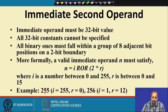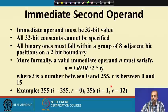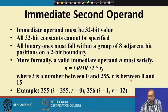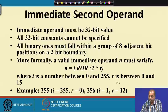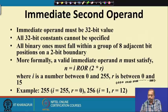For example, the number 255 can be represented in this format by taking i equal to 255 and r equal to 0. Similarly, you can represent 256 by taking i equal to 1 and r equal to 12. If I take i equal to 1 and r equal to 12, then i equal to 1 means the 8-bit number is 0x01 — that is, 0000 0001 — and I am rotating it right by 24 bits (since 2 × 12 = 24).